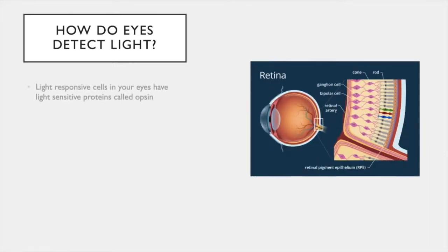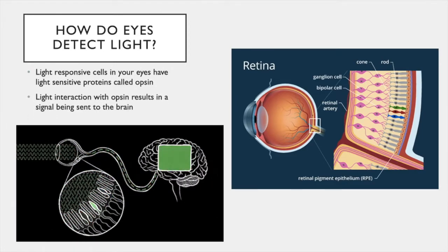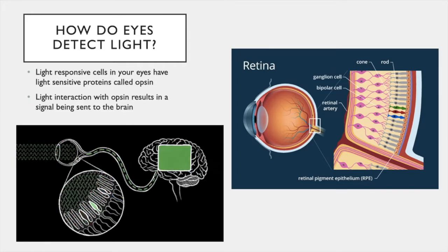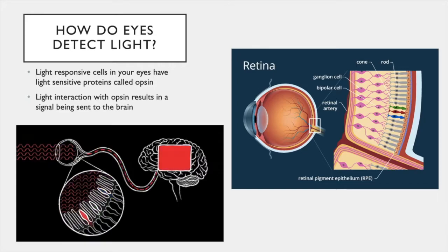So how does it work? First I want to talk about how our eyes detect light. Light-responsive cells in your eyes have light-sensitive proteins called opsins. For color vision, humans have three opsins expressed in different cells, each responding to a different wavelength of light corresponding to red, green, and blue in your retina. When light interacts with these opsins, it results in a signal being sent to your brain. Color vision results from a combination of active cells in your retina.